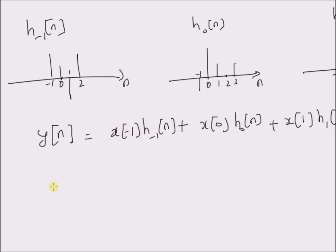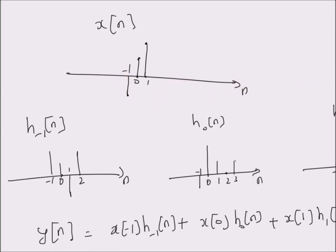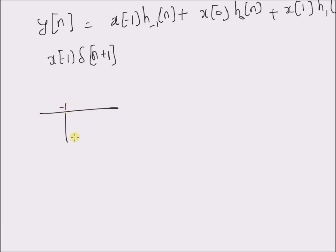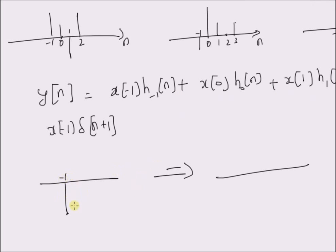For the first term, we have x(-1) multiplied by delta(n plus 1), which is basically the value of x(-1). The product of this value with h_{-1}(n) is given by a negative weight, so the signal h_{-1}(n) will be multiplied by this negative weight. This is x(-1) multiplied by h_{-1}(n).